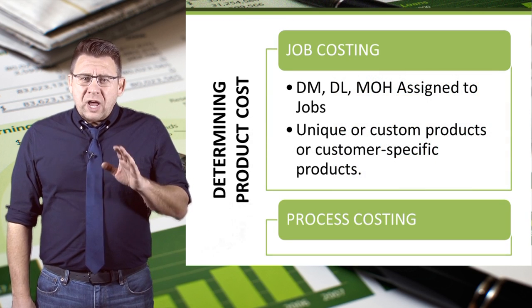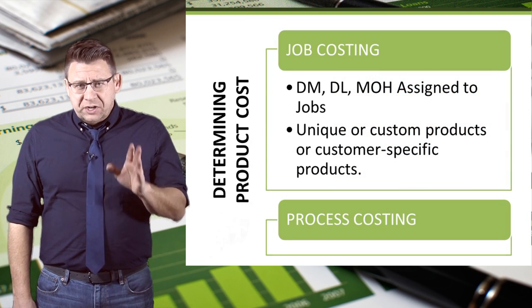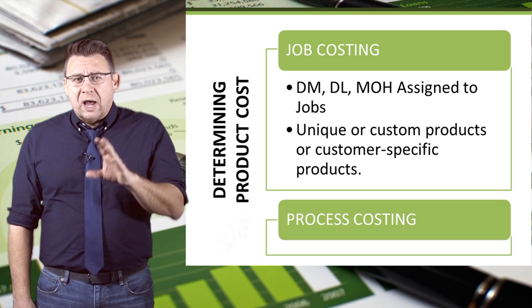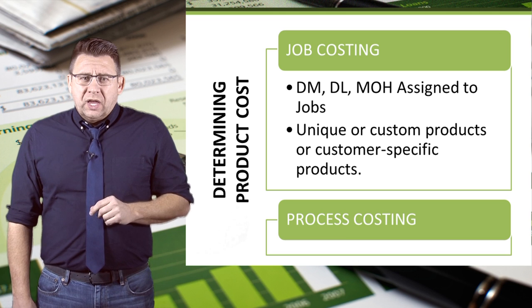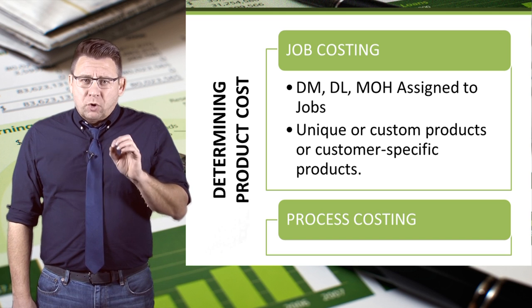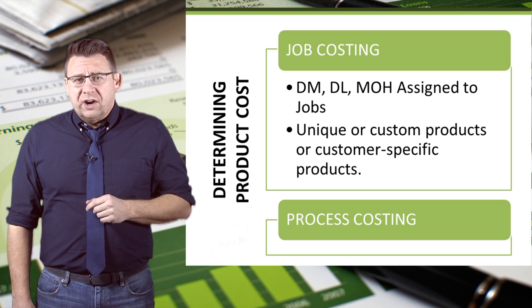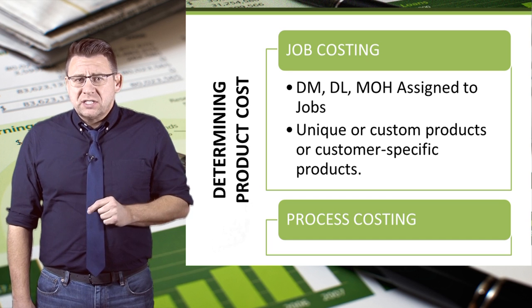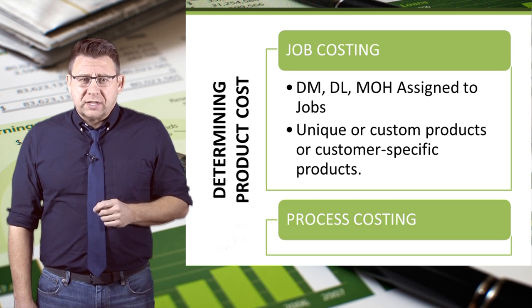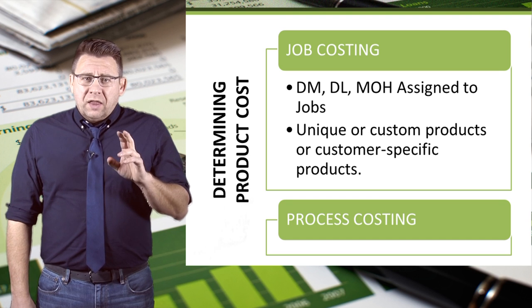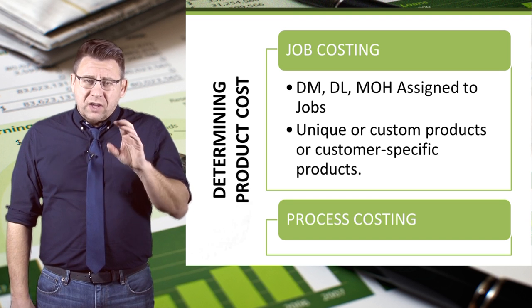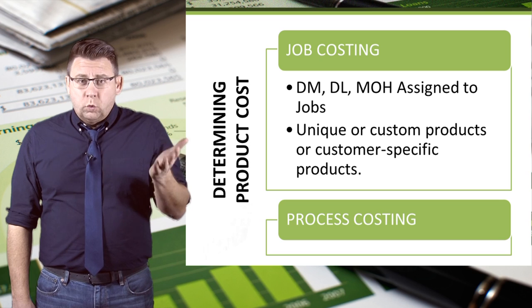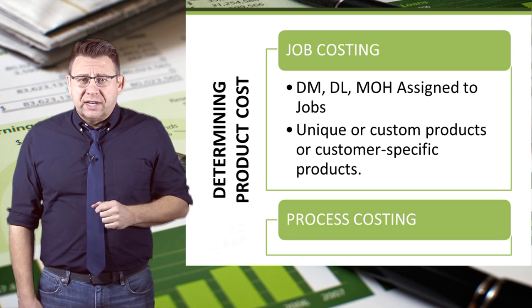In the job costing system, these material, labor, and overhead costs are assigned to each job or batch. A job or batch has its own distinguishing characteristics, like unique or custom products or customer-specific products. The cost object is the cost of the job, which could include one product or a batch of identical products.